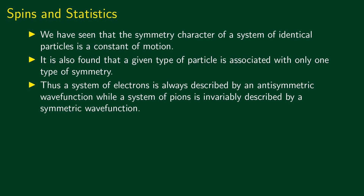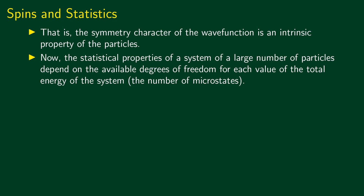We have already seen that the symmetry character of a system of identical particles is a constant of motion. This follows from the fact that all two-particle exchange operators commute with the Hamiltonian, that is pij-hat commutator with the Hamiltonian is equal to zero. Now it turns out that a given type of particle is associated with only one type of symmetry. For example, a system of electrons is always described by an antisymmetric wave function while a system of pions is invariably described by a symmetric wave function. So we see that the symmetric character of the wave function is an intrinsic property of the particles.